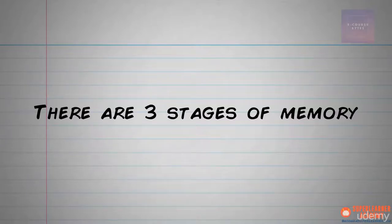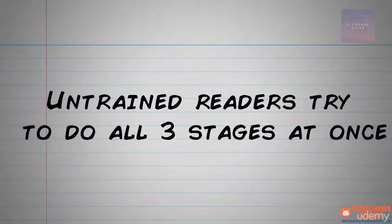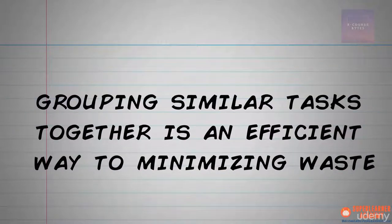Just like there are at least three types of memory, there are also three stages or processes of memory: encoding, storage, and retrieval. Where most people get into trouble is that they try to do all three at once. Have you ever read a paragraph or a page of text only to realize that you've been deeply immersed in thought and you haven't actually paid attention to anything that you just read? This is what happens when you're trying to do all three memory processes at once. If you've ever studied process operations management or economics, you know that grouping similar tasks together is an efficient way to minimize waste.